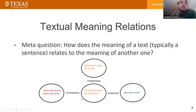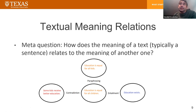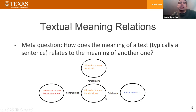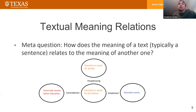Another interesting meaning relation is contradiction: if education is equal for all children, then it is not possible that some kids receive better education, and vice versa — these two sentences cannot be true at the same time. The third relation is entailment: if we know that education is equal for all children, we can safely assume that education exists. The general frame is: given two sentences, can you determine what relation holds between them? In natural language processing, the question is how we can do this automatically without a human processing the sentences.